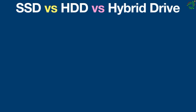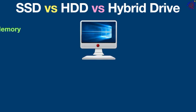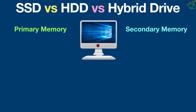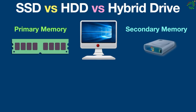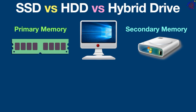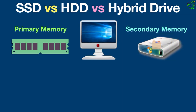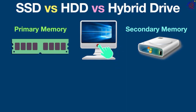Today we are going to see the difference between SSD, HDD, and hybrid drives. Before we get into the technical details, it's important to understand that a computer has two types of memory: primary memory and secondary memory. Primary memory is temporary, such as RAM, while secondary memory is permanent, such as a storage drive. Every computer needs a place to store data — audio files, videos, pictures, documents — and such drives need to be non-volatile, meaning they keep data even when the computer is switched off.